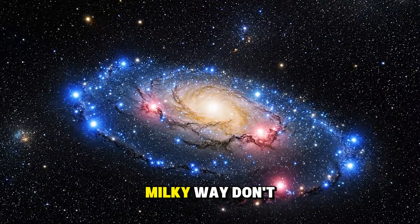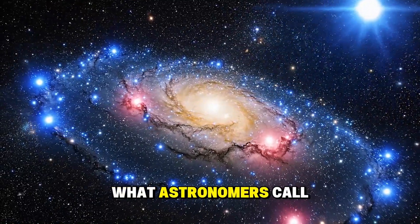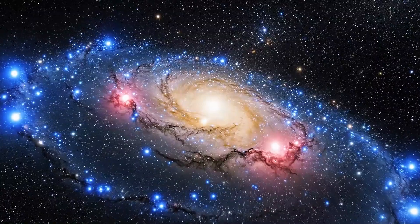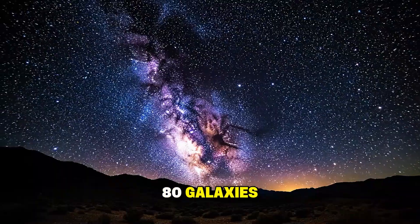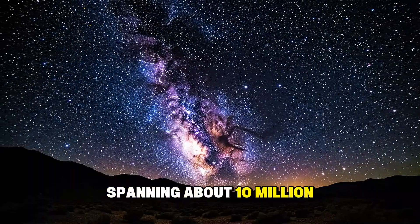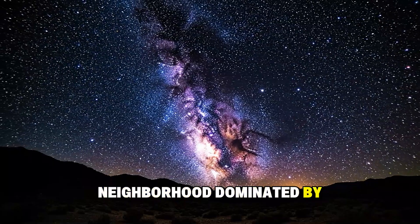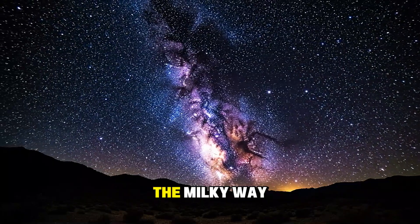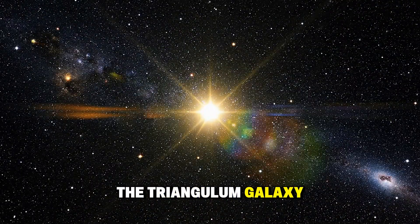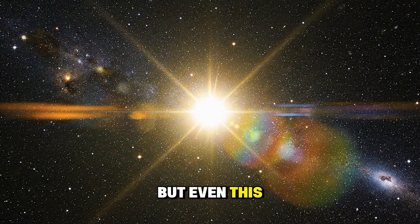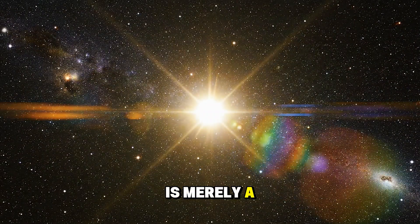Andromeda and the Milky Way don't dance alone. We're part of what astronomers call the Local Group, a gravitationally bound collection of roughly 80 galaxies spanning about 10 million light years. It's our cosmic neighborhood, dominated by three large galaxies: the Milky Way, Andromeda, and the Triangulum Galaxy. But even this, this collection of dozens of galaxies, is merely a speck.